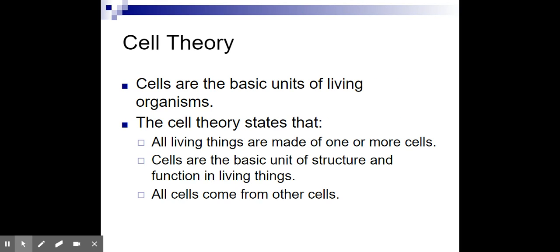First off, we need to talk about cell theory. This is a collected body of knowledge that cells must be, by definition, the most individual and basic units of living organisms. It's one of our eight characteristics of life that to be considered alive, you must be made up of one or multiple cells. All living things must be made up of one or more cells, and cells have to be the basic unit that includes all of the necessary structures and functions within living creatures, having all eight characteristics of life as well.